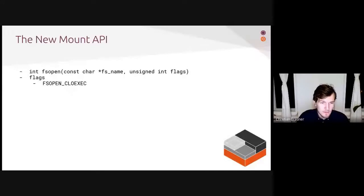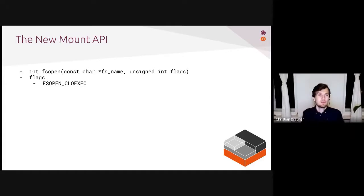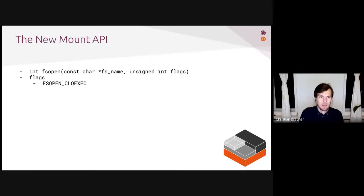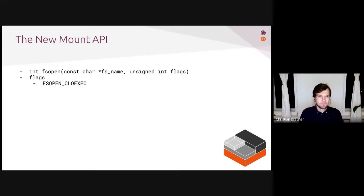The fsopen context is an anonymous inode file descriptor. Most file descriptors in the Mount API that don't represent actual file system objects are anonymous inodes — basically file descriptors that all share the same inode because they don't need a full inode. Think of it as representing some form of in-kernel state or an in-kernel object. In our case, the kernel now has a context for an ext4 file system and is waiting for you to do something with it.